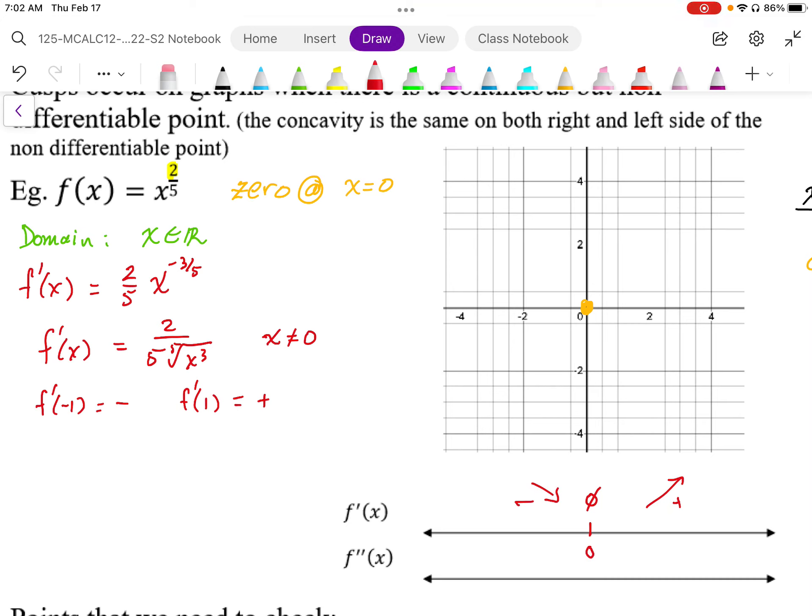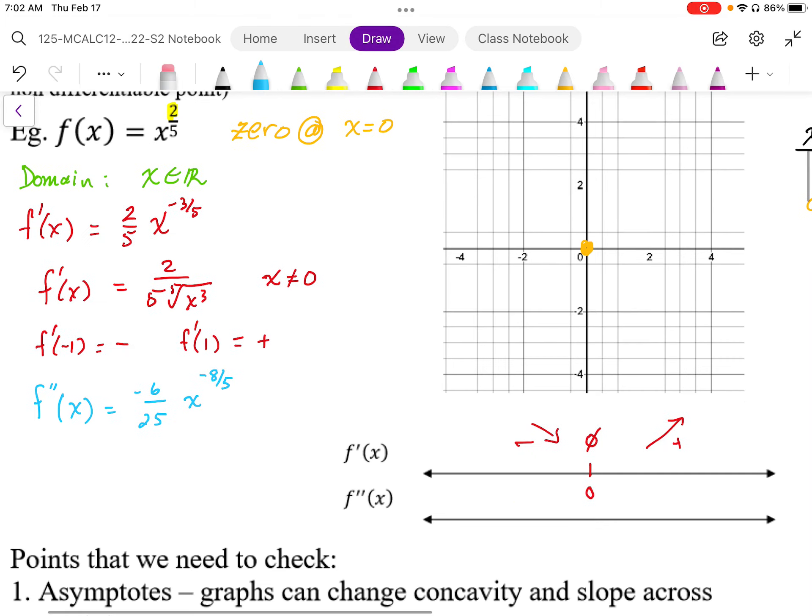We want to now check the concavity. Looking at the concavity, the second derivative, using the power rule, we're going to end up with negative 6 over 25, and then x to the power negative 8 over 5. Rewriting this, I'm going to end up with negative, in the denominator I get 25, and this is going to be an 8th power and a 5th root. That 8th power makes the denominator always positive.